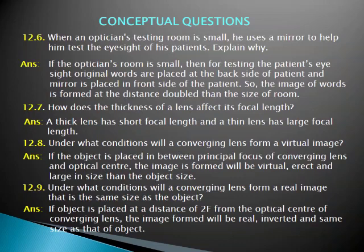Because the room is small, the words can be seen in front of the mirror from a greater distance, so the eyesight can be checked. This is why we use the mirror — so that the words can be seen at double the distance of the room and the eyesight will be checked.